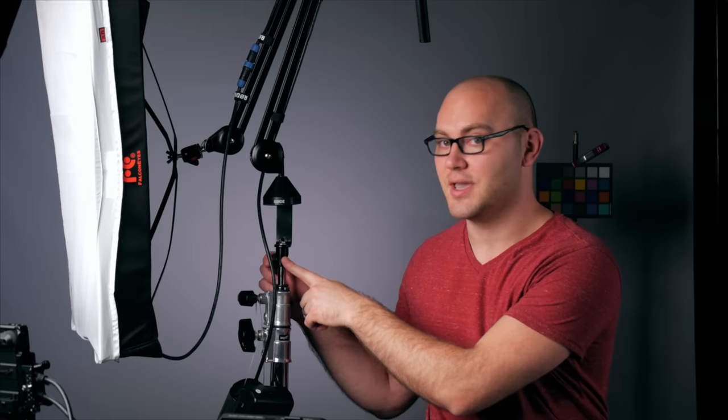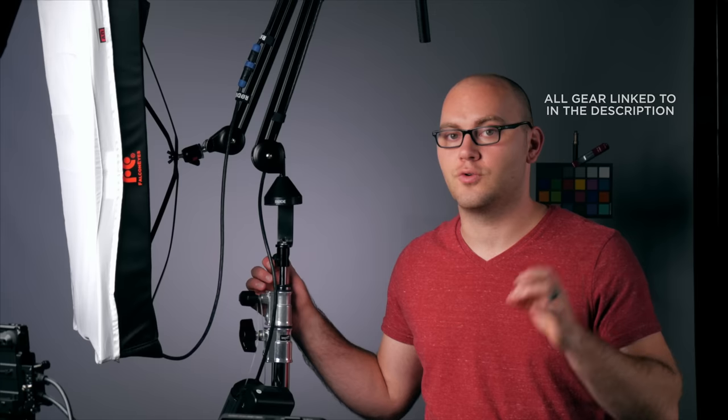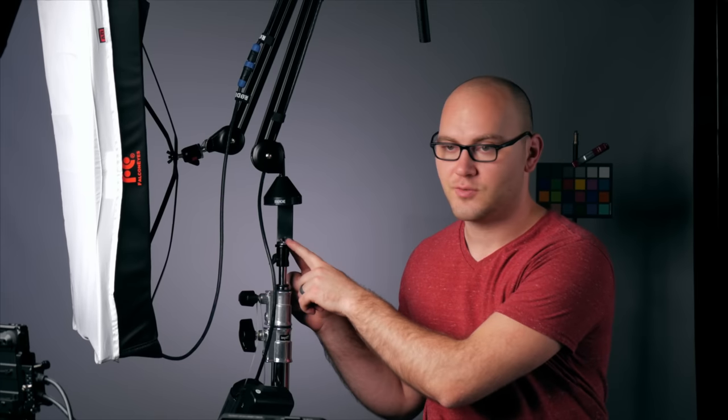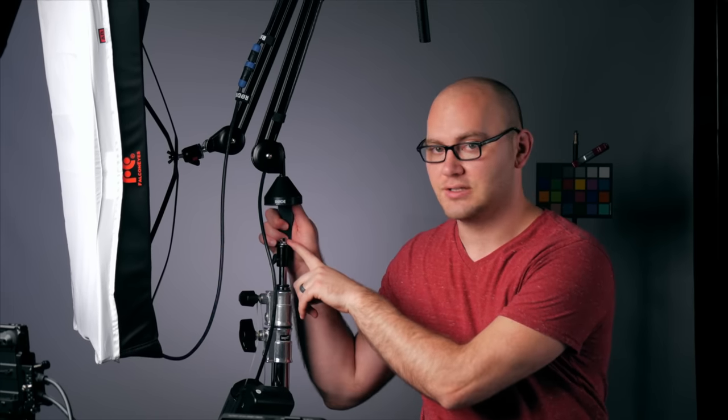As we work our way up, the very next thing is a Rapid Baby Adapter. This essentially takes your light stand 5/8 stud at the top and turns it into either a 3/8 thread or a 1.25 thread. This particular one is the 1.25. And from there, things get really exciting.